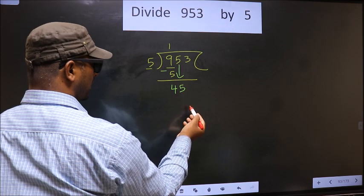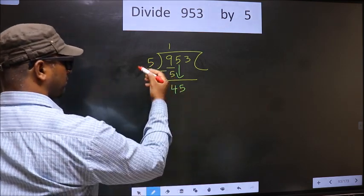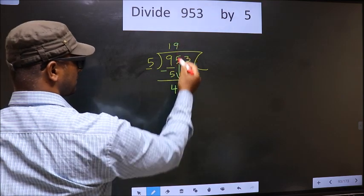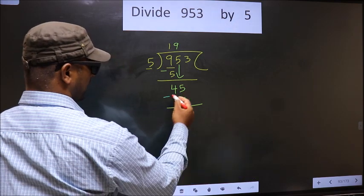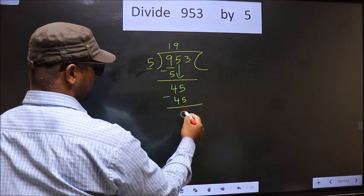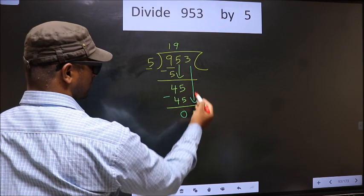Now here we have 45. Here 5. When do we get 45 in the 5 table? 5 nines, 45. Now you subtract. 45 minus 45, 0. Now you bring down the next number. So 3 down.